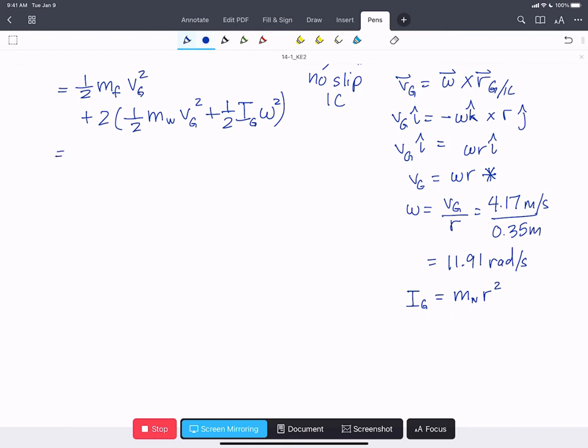So we're going to sub that into our equation. We'll have 1 half mass of the frame, VG squared, plus 2 times 1 half mass of the wheel, VG squared, plus 1 half times mass of the wheel, R squared, omega squared.